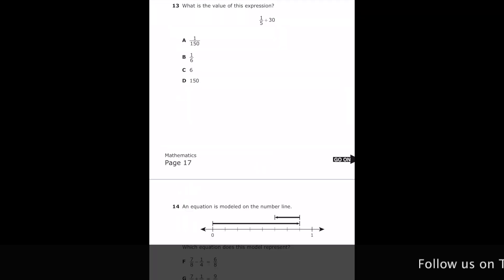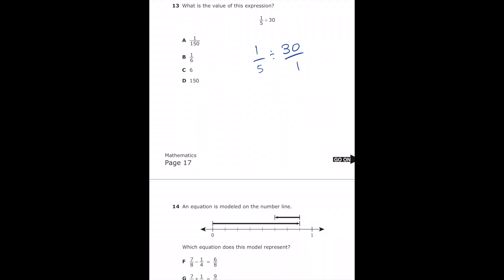Number 13, what is the value of this expression? 1 fifth divided by 30. So I'm going to change this to 1 fifth divided by 30 over 1. And I know that if I divide fractions, I can just do keep change flip. So I'm going to change this to 1 fifth times 1 over 30. So now we're going to get 1 is still the numerator, and then 5 times 30, if we work that out, we should get 150. So if we look at our answer choices, we're going to get letter A.